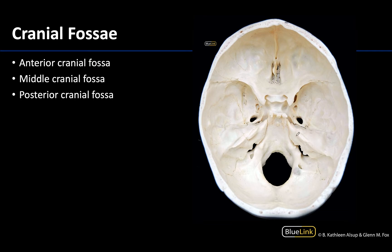We are looking at a superior view of the basicranium. The brain would have been sitting right in here, and that shows this stair-step fashion of the fossae. The anterior portions are a little bit higher. The middle cranial fossa will be intermediate, and then you'll have this really deep posterior cranial fossa, which makes sense because the cerebellum would be sitting in this region during life — so it's the lowest step.